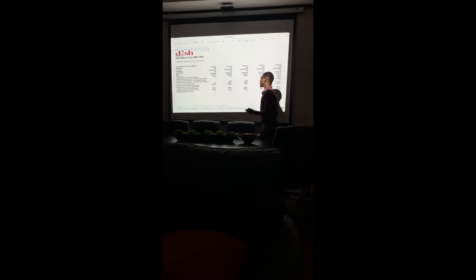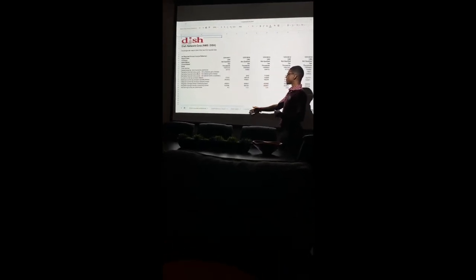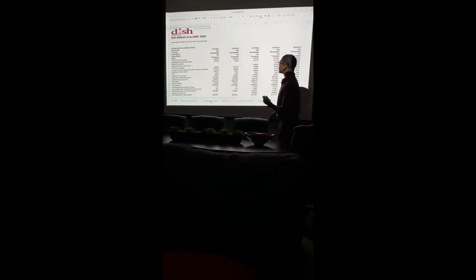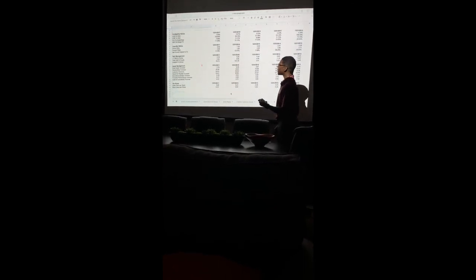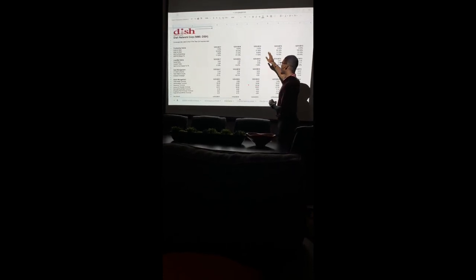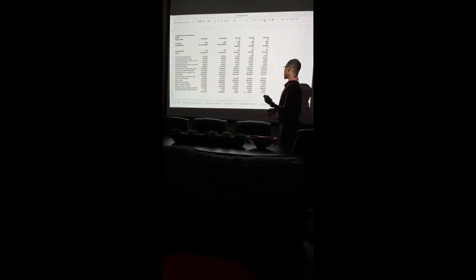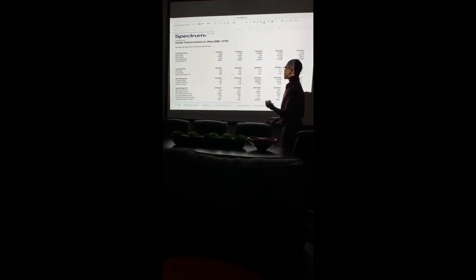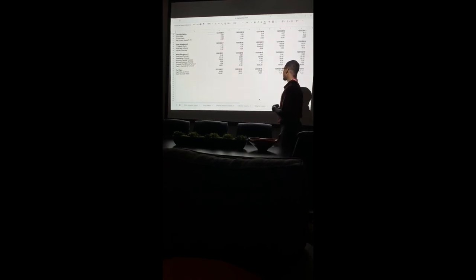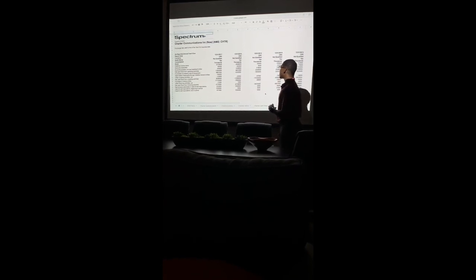Looking at the Excel spreadsheet, this is DISH's income statement, followed by the balance sheet. Then we have DISH's ratios — liquidity ratios, debt management, and profitability ratios — with the formulas already plugged in. Next is Charter's balance sheet, then Charter's income statement, and then Charter's ratios, which reflect everything discussed in the presentation. Finally, there's a cash flows tab as well. And that's it — thank you.